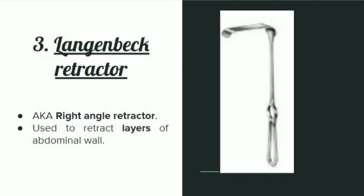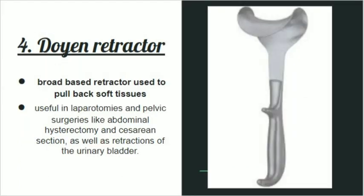The third retractor is the Langenbeck retractor. It is smaller than the Morris retractor and is also known as the right angle retractor. It is used to retract layers of the abdominal wall.